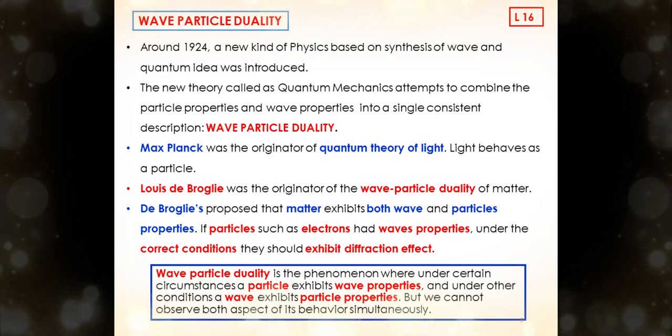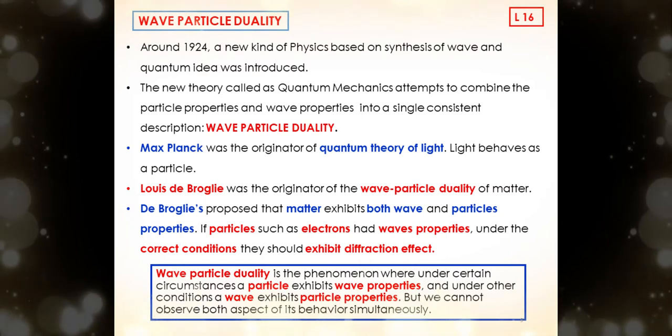How was wave-particle duality introduced? Around 1924, a new kind of physics based on synthesis of wave and quantum idea was introduced. The new theory, called quantum mechanics, attempts to combine the particle properties and wave properties into a single consistent description: wave-particle duality. Max Planck was the originator of quantum theory of light. Light behaves as a particle. Louis de Broglie was the originator of the wave-particle duality of matter. De Broglie proposed that matter exhibits both wave and particle properties. If particles such as electrons had wave properties, under the correct conditions they should exhibit diffraction effect. So as a conclusion, we can say that wave-particle duality is the phenomenon where under certain circumstances a particle exhibits wave properties, and under other conditions a wave exhibits particle properties. But we cannot observe both aspects of its behavior simultaneously.